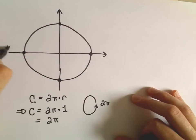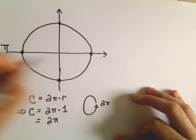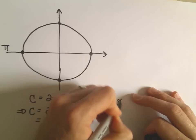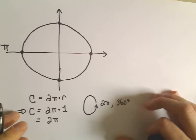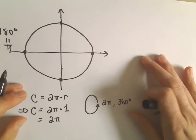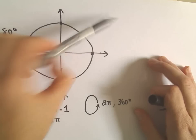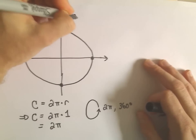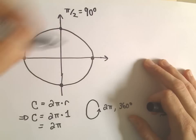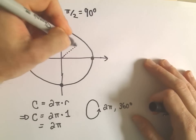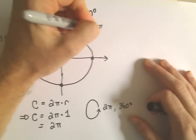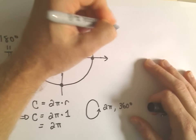If we go halfway around, that's going to be π radians, which corresponds to 180 degrees — that's one revolution divided by two. If we take half of that, we'd have π over 2, which corresponds to 90 degrees. If you take half of π over 2 — half of a half is a fourth — so this will be π over 4, or equivalently 45 degrees.